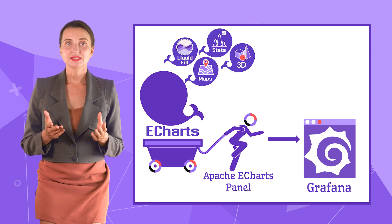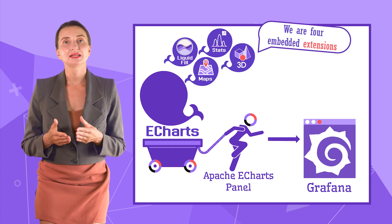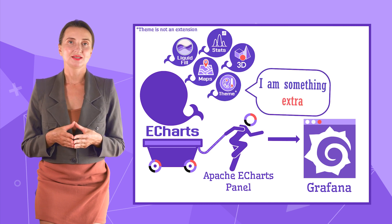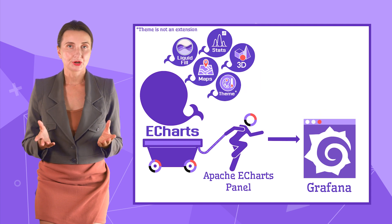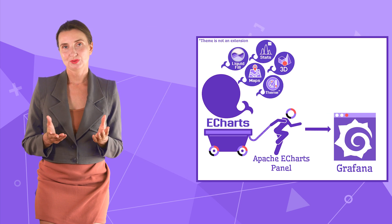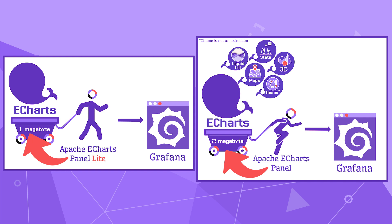Statistics, maps, and 3D are core Apache eCharts extensions we embedded into the plugin. There is also very convenient theme functionality. We realized that more is not always better and created a lightweight variation called Apache eCharts panel Lite. It has the same core functionality and no embedded extensions. The Lite variant is twice smaller than the regular plugin.